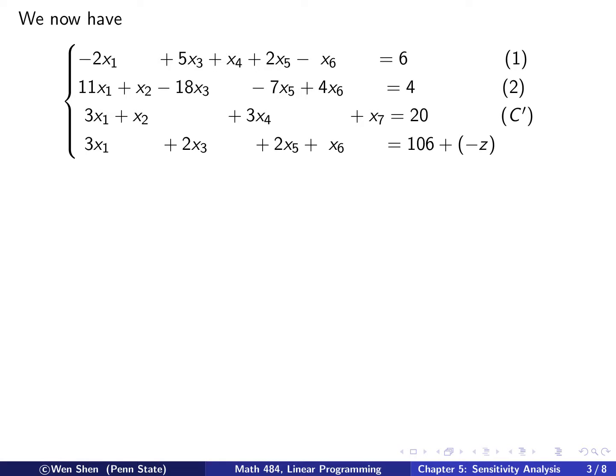Now we have the following problem, and we have three constraints. So this means 1 and 2 are unchanged, the third one, C prime, is the new one that we added, with X7 here. And that's the objective function. And we see that it's kind of almost in the canonical form, but not really, because this X7 is okay.